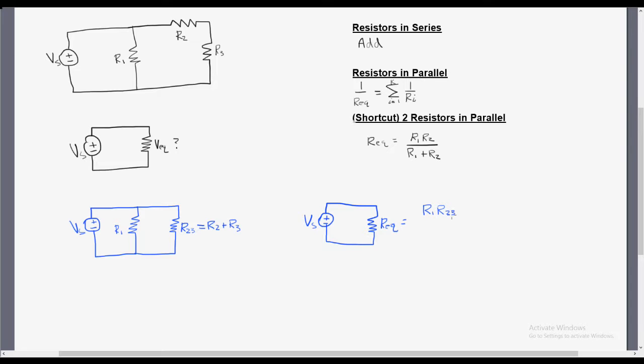Using our shortcut equation for two resistors in parallel, we're going to multiply the two values and divide by the addition of those two values. By substituting R2 plus R3 for R23, we can get our